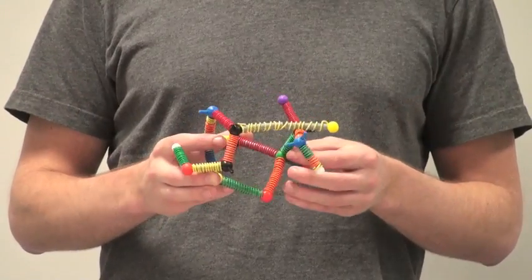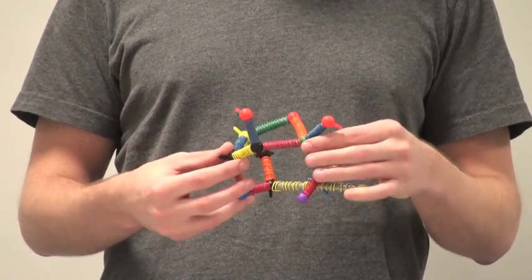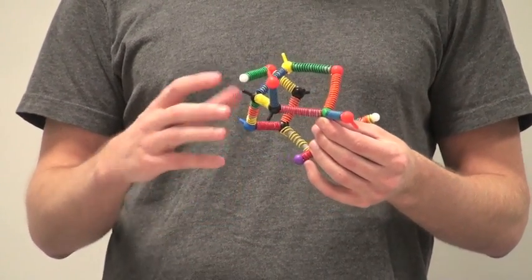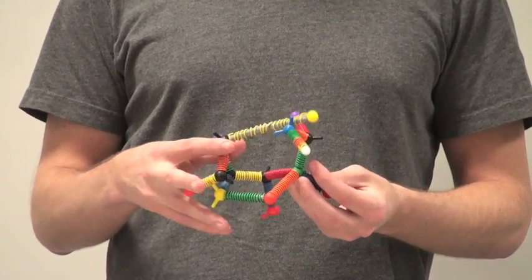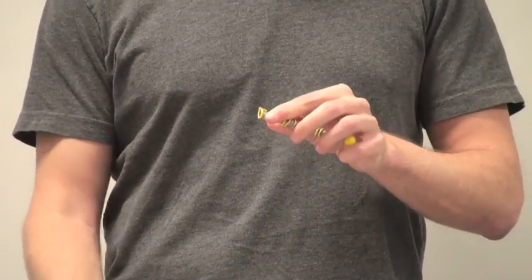If we think about a protein as a three-dimensional construction of individual secondary structures, each represented by the different color bands on this model, we can understand the value of trying to describe the mechanical behavior of an individual secondary structure.